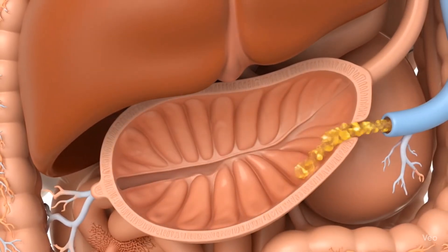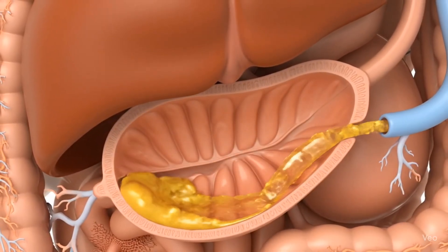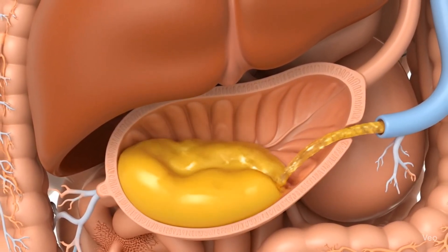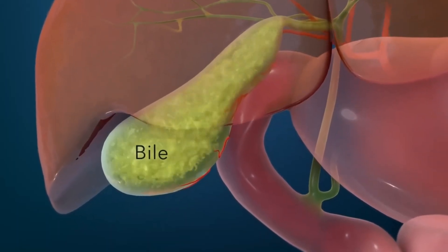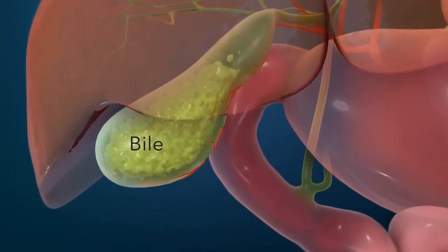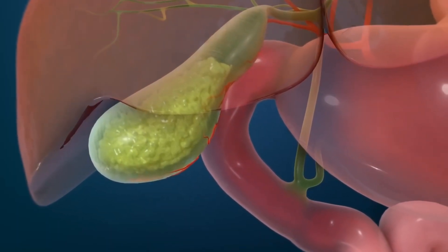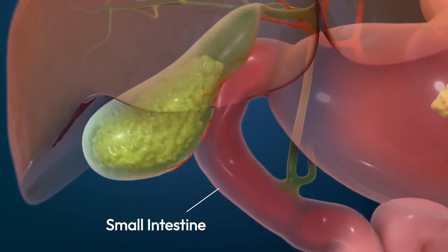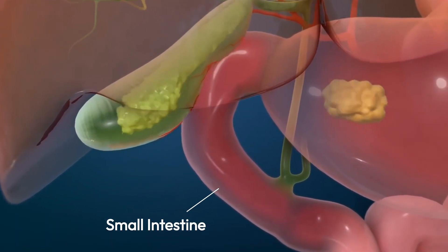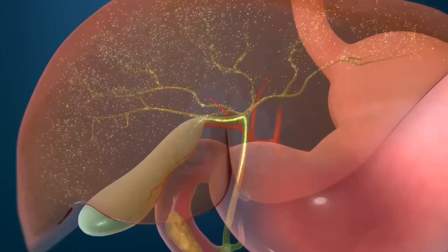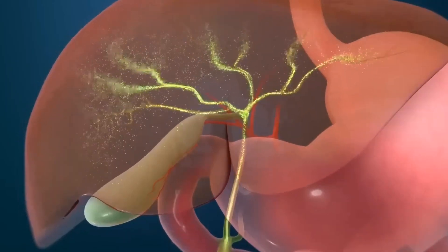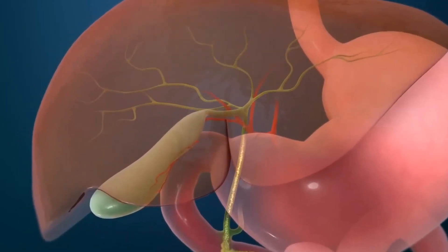After the liver produces bile, it travels down the bile duct and into the gallbladder. The gallbladder then secretes bile into the upper part of the small intestine using the common bile duct. But here is an important question: can you live without a gallbladder?